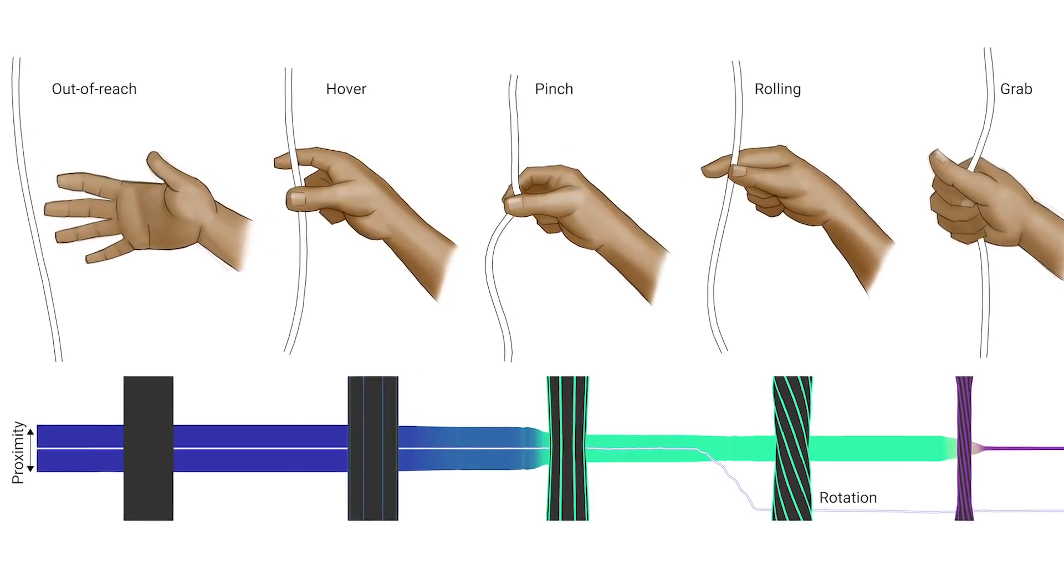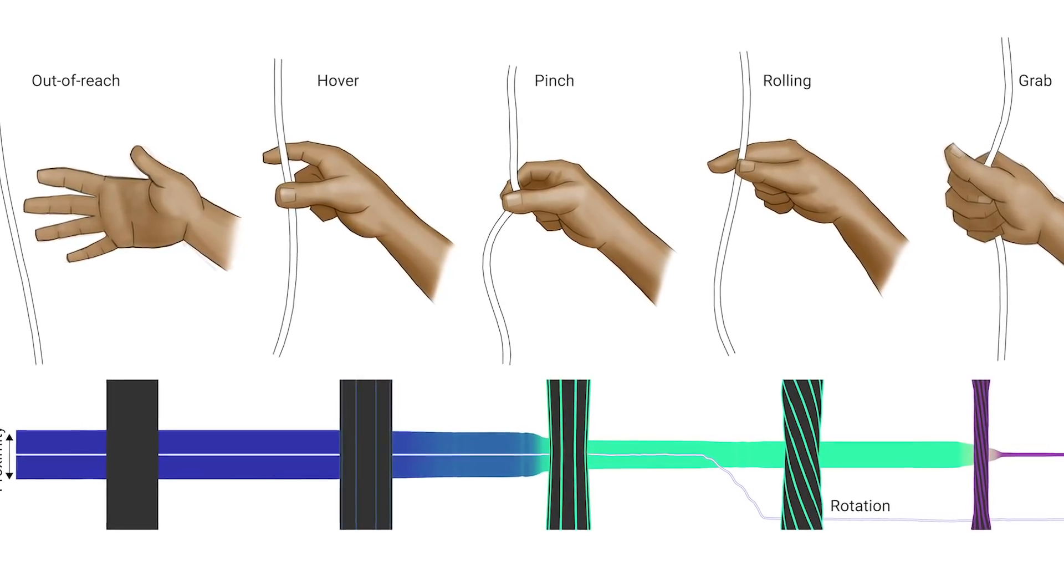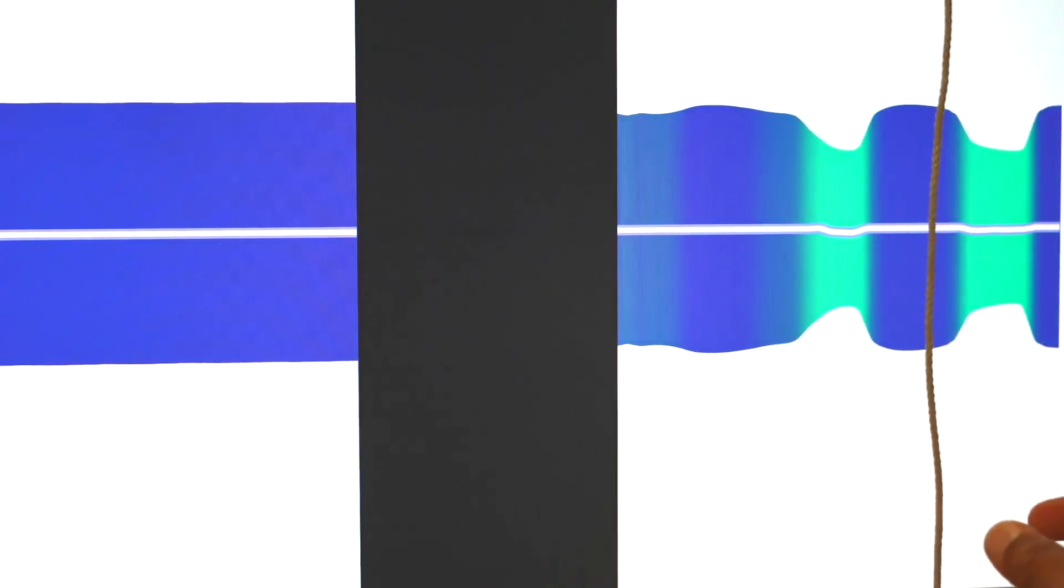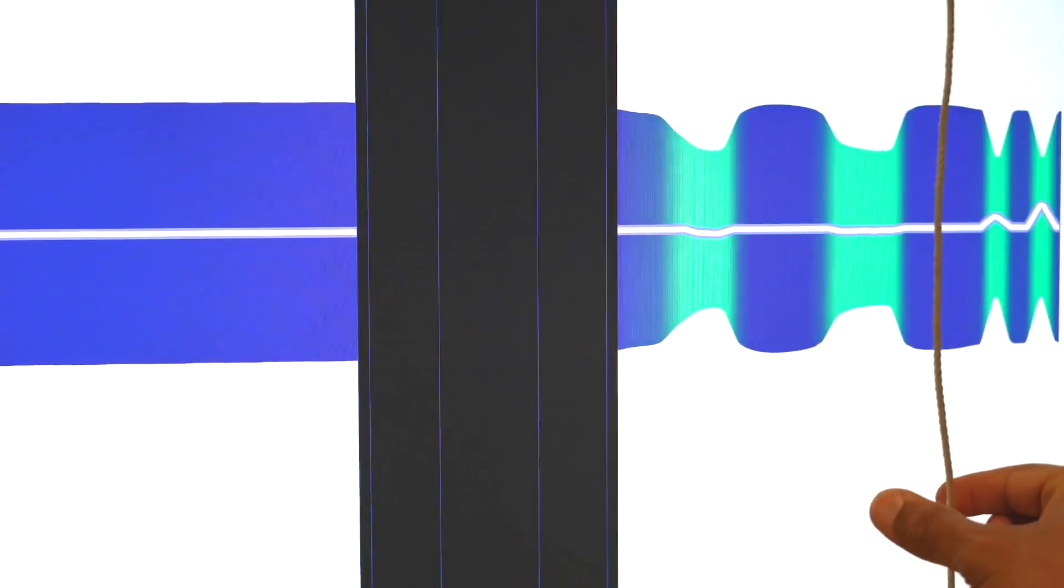This visualization illustrates Iobraid's sensor response from different interactions with the textile. The capacitive sensing gives us the ability to sense hover and contact, including contact area.